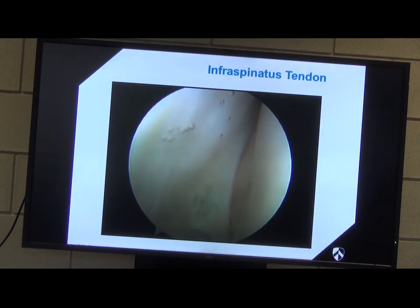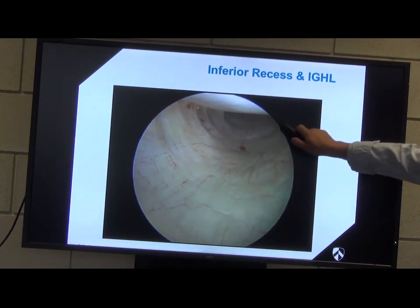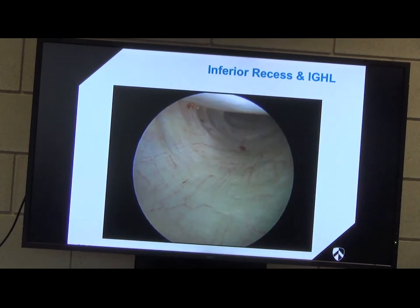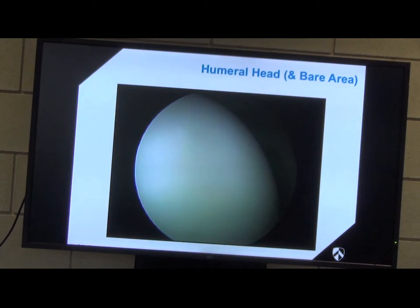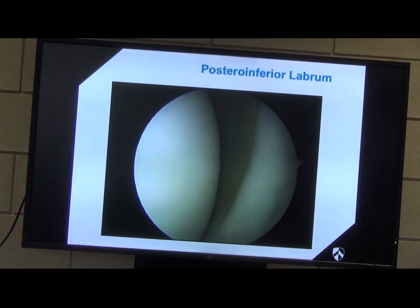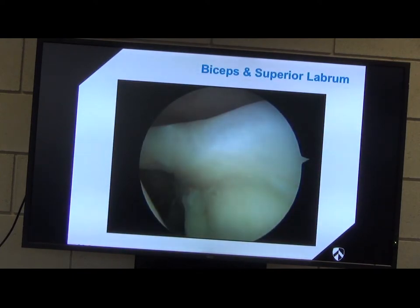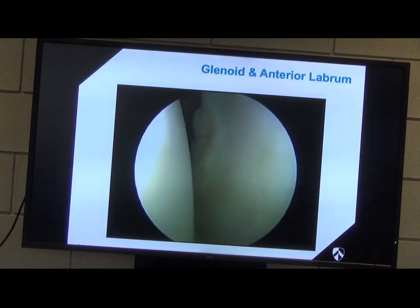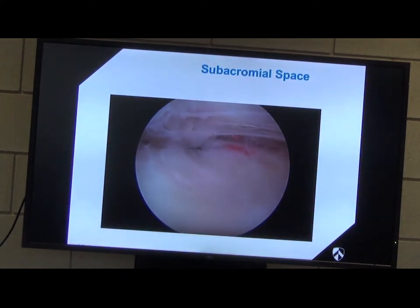This is the infraspinatus tendon — now we're looking at the back of the humeral head. That is the inferior recess. This is the attachment of the inferior glenohumeral ligament. So if you have a HAGL — humeral avulsion of the glenohumeral ligament — it's going to fall away from the humerus and away from the articular margin. Humeral head articular surface. You can rotate the humeral head to look at all portions of the articular surface. The posterior inferior glenoid labrum, then the recess posteriorly, superior attachment of the biceps, the anterior part of the glenoid labrum, anteroinferior, and then the subacromial space — we're actually inside the bursa there.